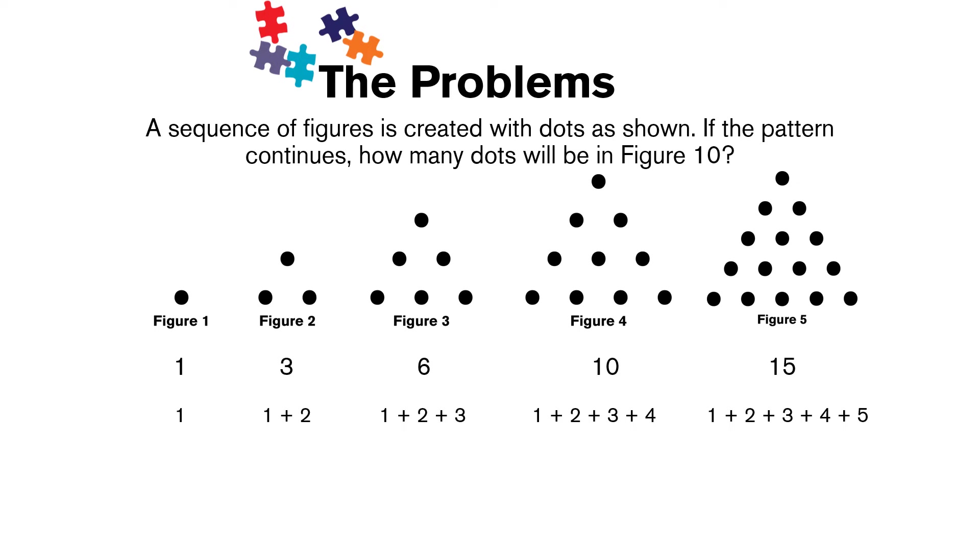So we can use this without drawing out our pattern. We can figure out what figure 10 is, and figure 10 is going to be the sum of all the integers starting from 1 and going through 10. So it's 1, 2, 3, 4, 5, 6, 7, 8, 9, 10. And if we add all of this up, you should get 55 dots.